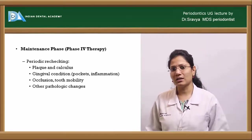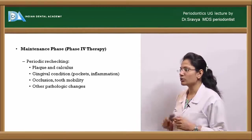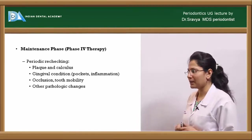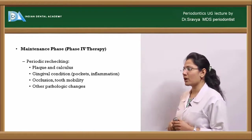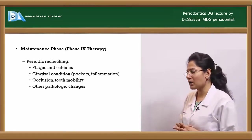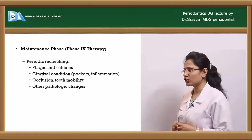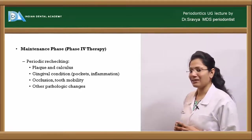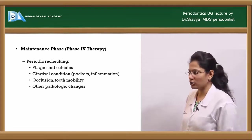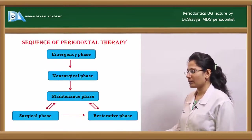The last phase is the maintenance phase — phase four — also called supportive periodontal therapy. It includes periodic re-checking for calculus and plaque, gingival condition, pocket depths and inflammation, occlusion and tooth mobility, and any other pathological changes.